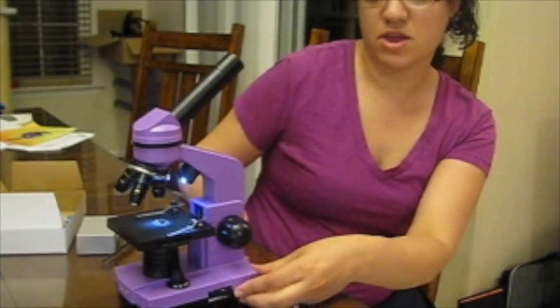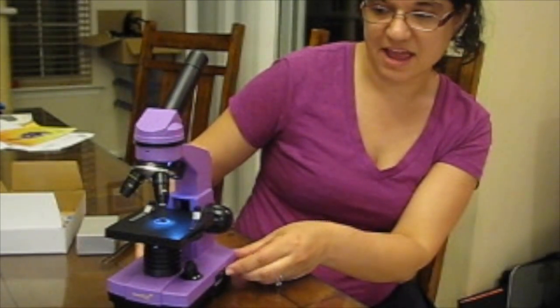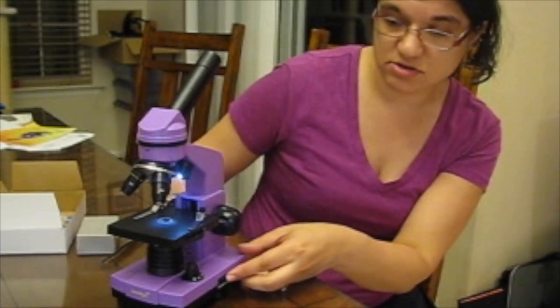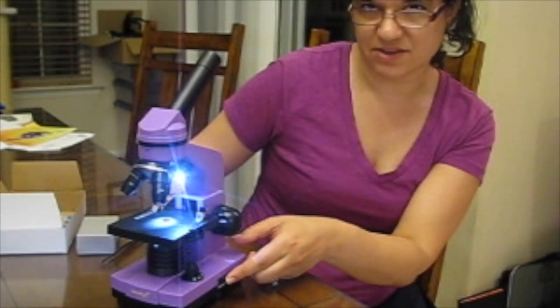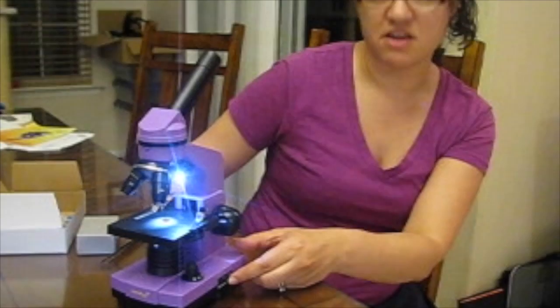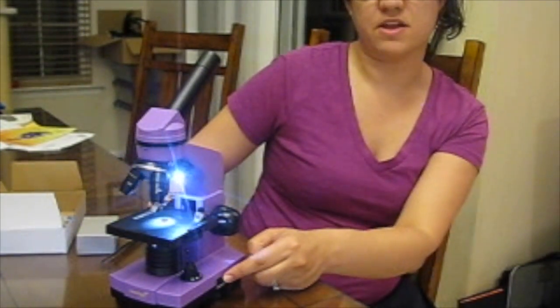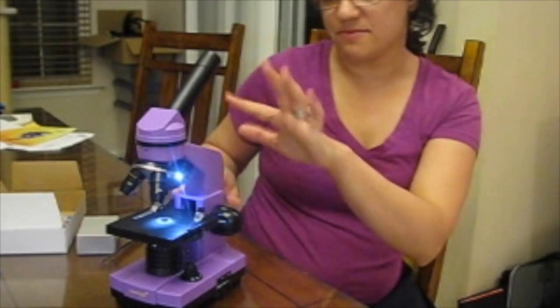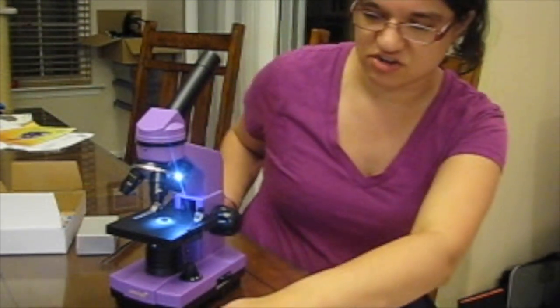There's also a wheel over here that I can use to dial in the intensity of the lower light source. You can definitely see on the video that as I dial it up, that light gets brighter. And that's actually really nice. I find that as you change the magnification level, sometimes you want to change the brightness to keep things clear. So that's nice.